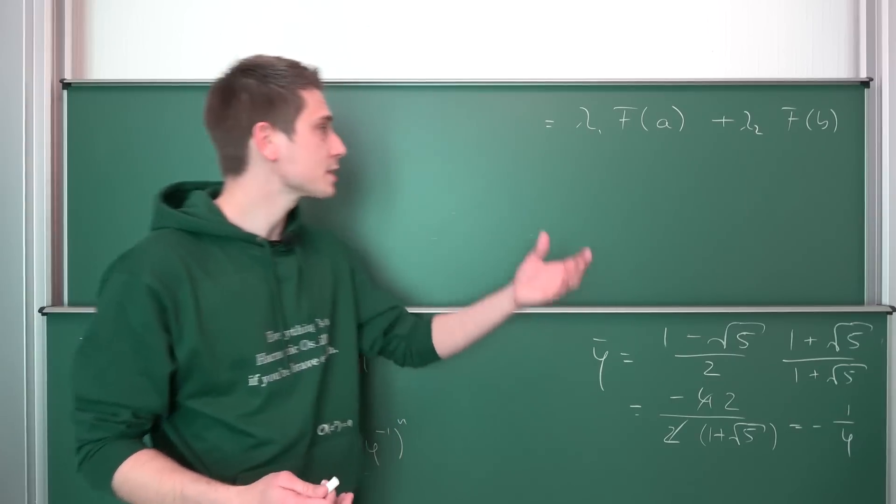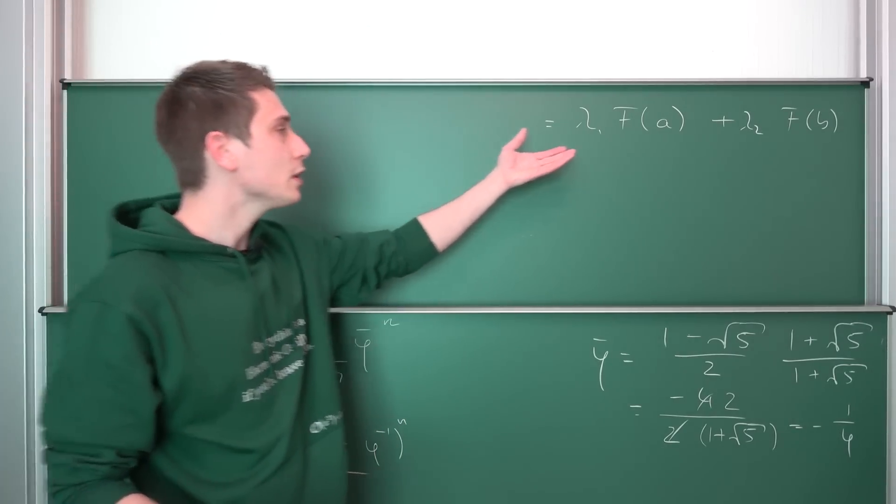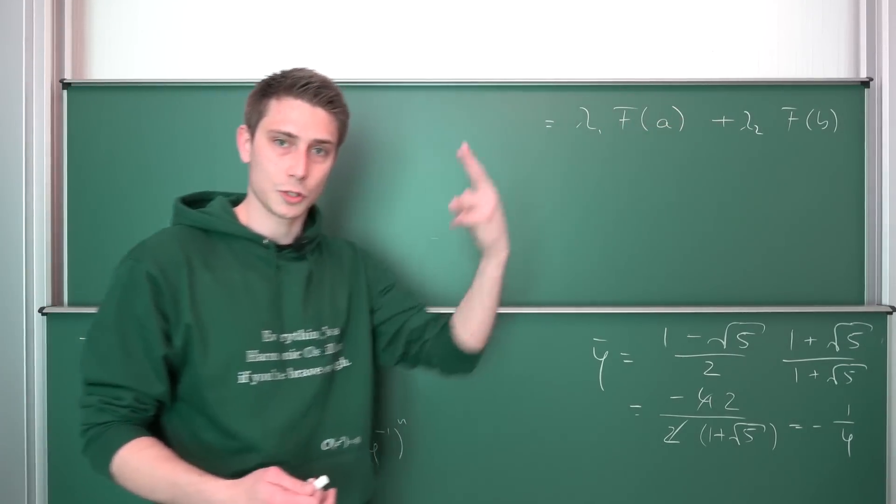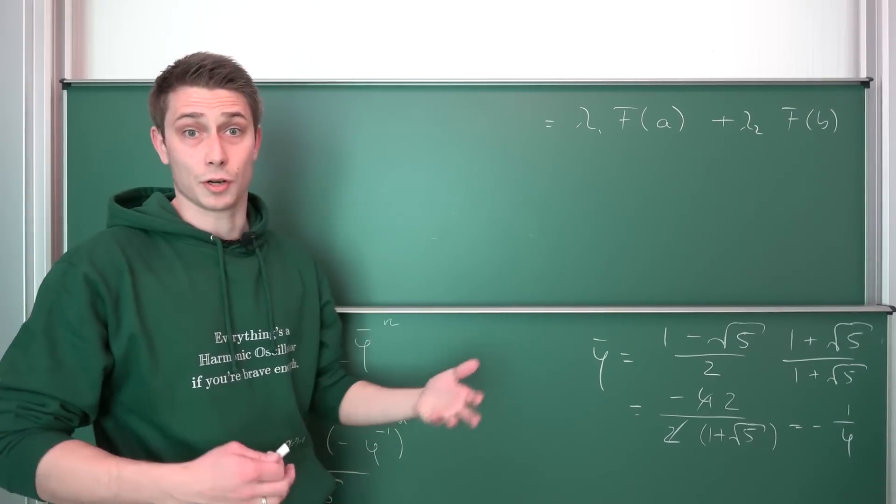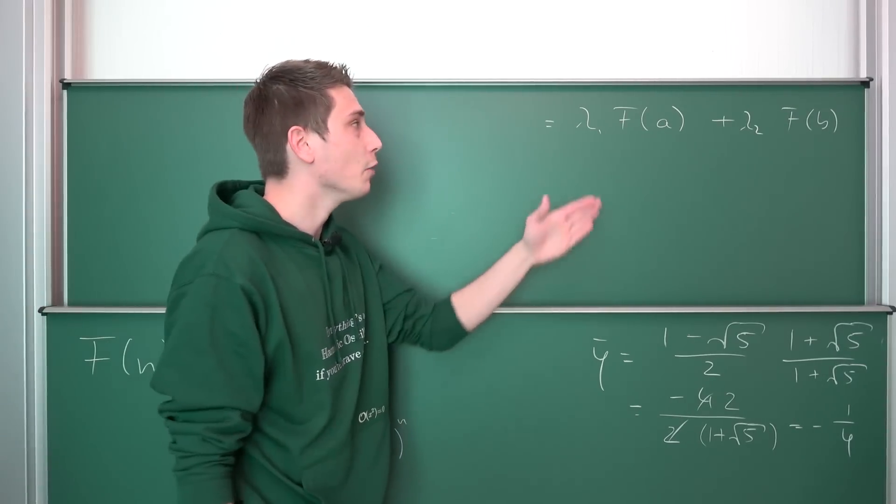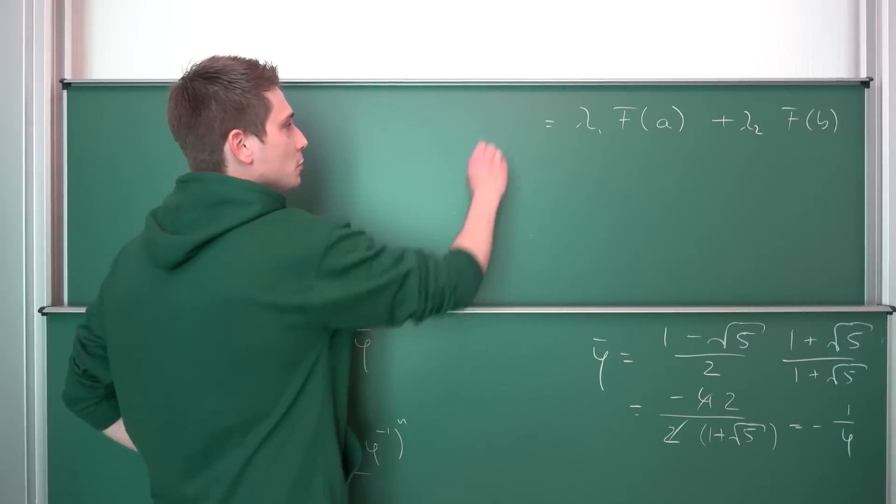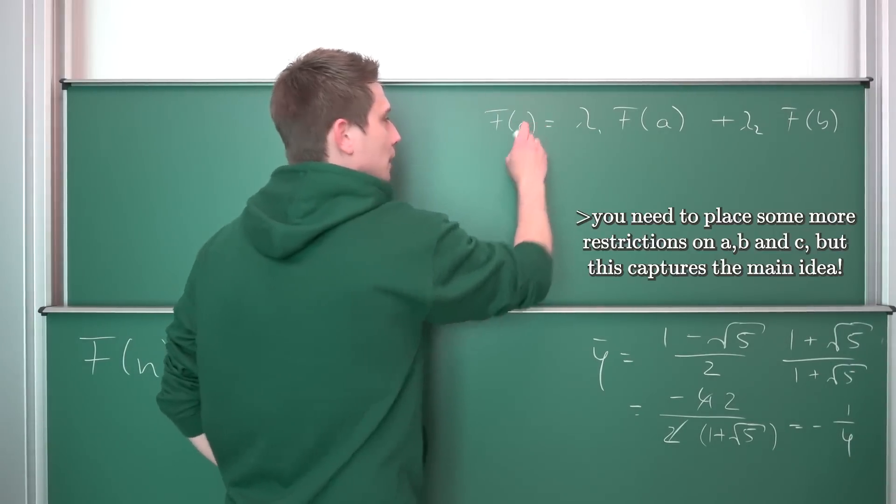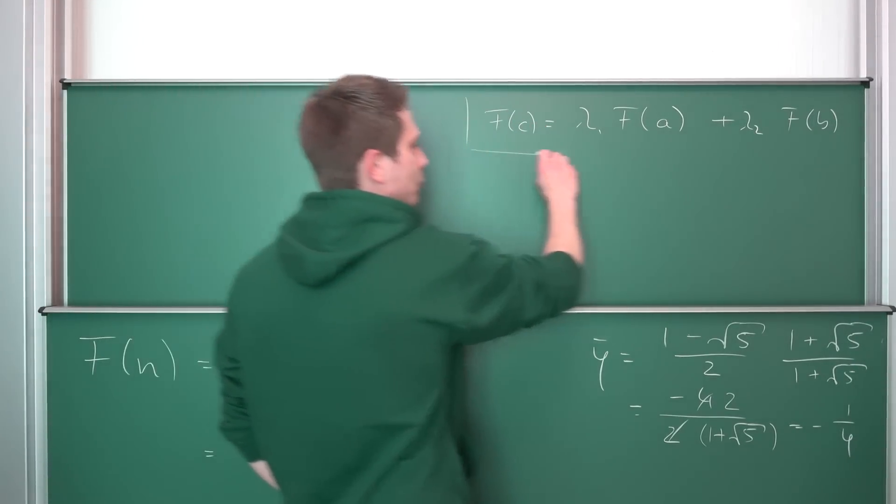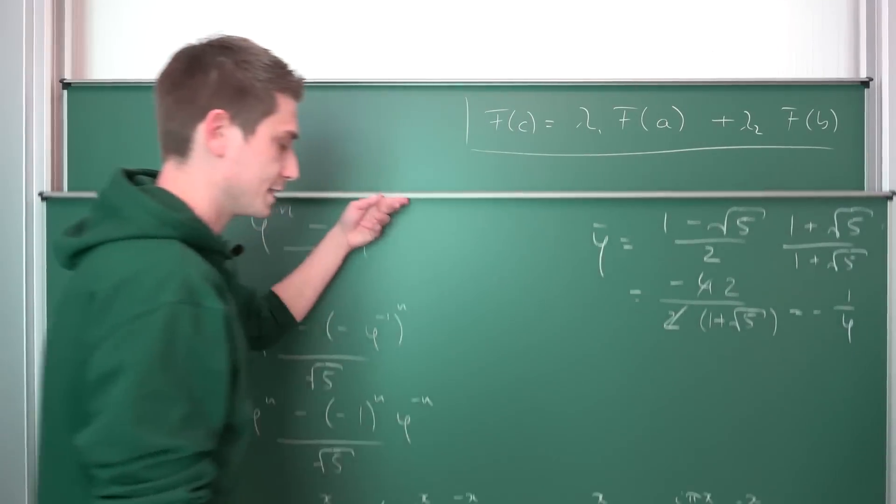This is just how the Fibonacci number works, or the Fibonacci numbers in general. You take a linear combination of two distinct Fibonacci numbers, or they also can be the same, then you average them out, and then you are going to end up with a new solution. Let's call it f of c to the Fibonacci sequence. You can do the same thing with what we have right here.